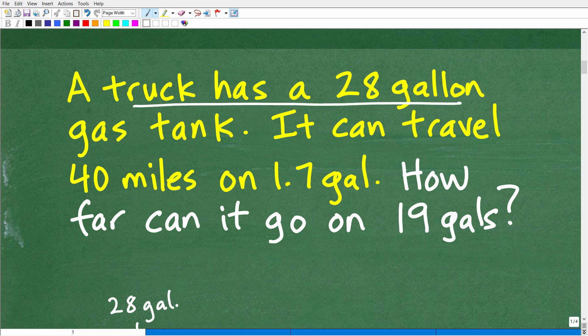So we have this truck. It has 28 gallons in a gas tank. Right. That's like, when you fill it up, it has a 28 gallon capacity. It can travel 40 miles on 1.7 gallons. But what is the question here? We're looking for how far can it go on 19 gallons? So we're looking for how far we're looking for distance. We're looking for miles. Right. So that is the question.